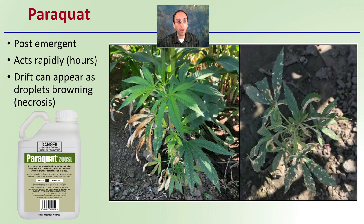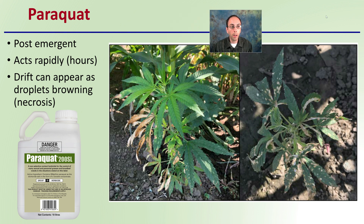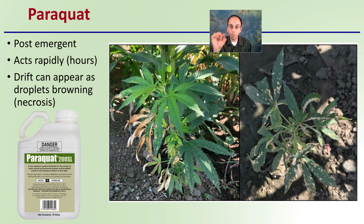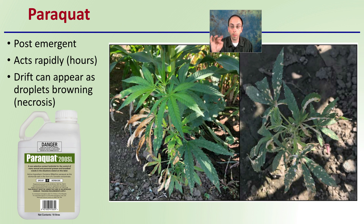Then we also have paraquat. This is another post-emergent; it's a Group D herbicide that acts rapidly within hours. Drift can appear as droplet browning and necrosis, giving kind of a speckling effect. Of course, if it occurs in a larger degree, you will get browning of the entire leaf, but sometimes that little speckling is what's evident — and that can be an indication that you're getting some spray drift from this particular herbicide.